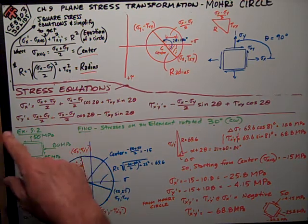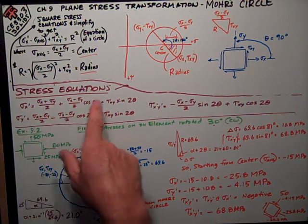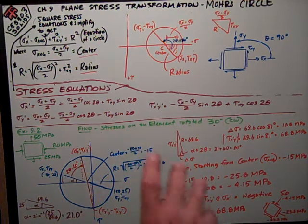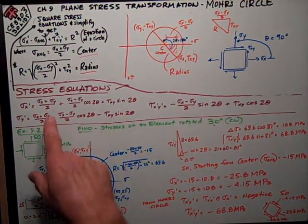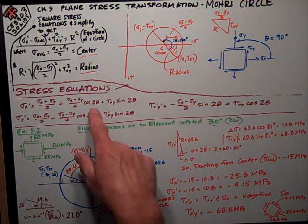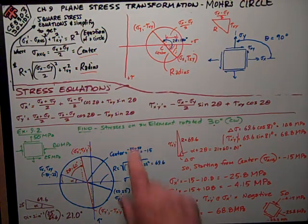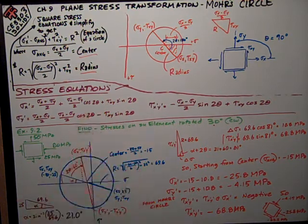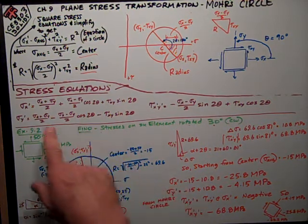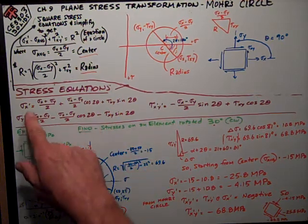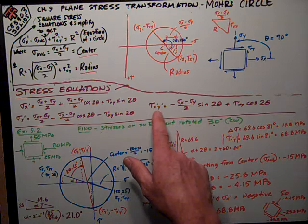On the previous video or previous part of this semester, we derived some stress equations for different orientations other than x and y for rotation of an angle theta. The equations using equilibrium sum of forces analysis turned out to be these three expressions for sigma x prime, sigma y prime, and tau x prime y prime.